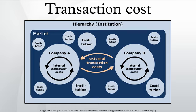For example, the buyer of a used car faces a variety of different transaction costs. The search costs are the costs of finding a car and determining the car's condition. The bargaining costs are the costs of negotiating a price with the seller. The policing and enforcement costs are the costs of ensuring that the seller delivers the car in the promised condition.